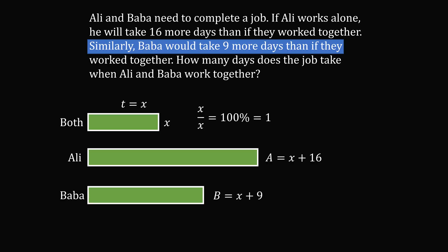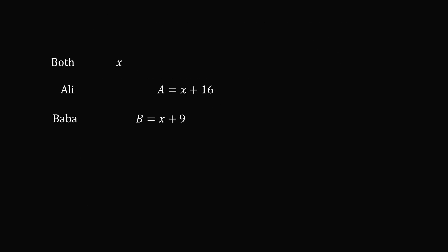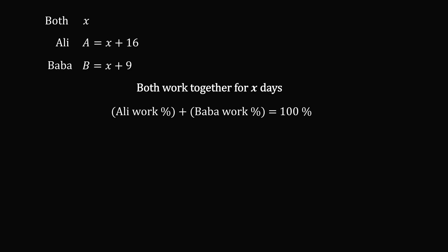So now let's just focus on these variables. We have x, x plus 16, and x plus nine. So imagine that Ali and Baba work together for x days. So we know that the percentage that Ali does of the job plus the percentage that Baba does is equal to 100% of the job.